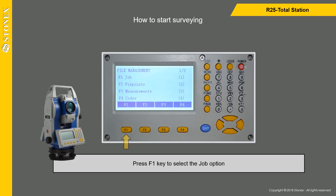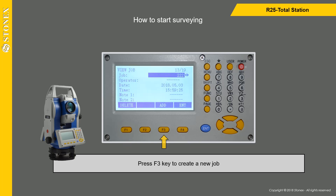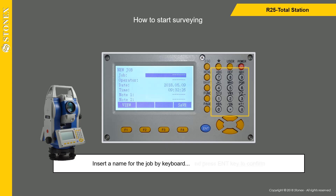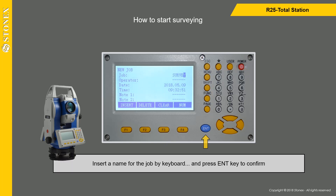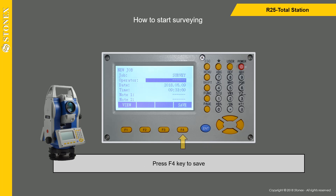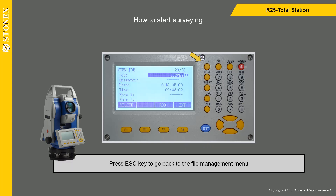Press F1 to select the job option. Press F3 to create a new job. Insert a name for the job using the keyboard and press Enter to confirm. Press F4 to save. Then press Escape to go back to the file management menu.